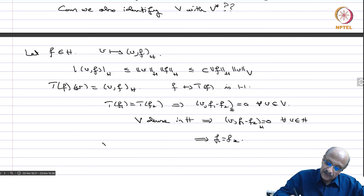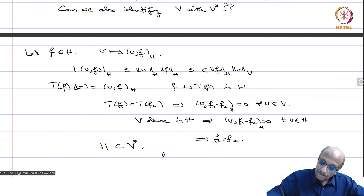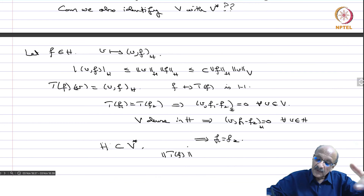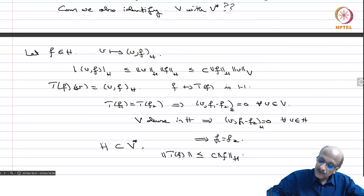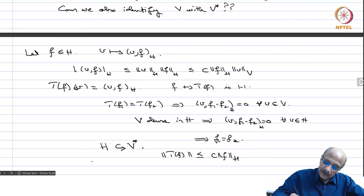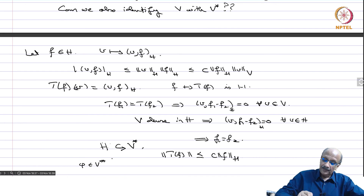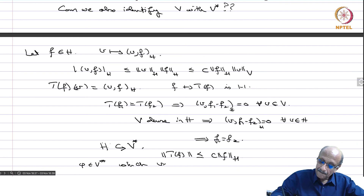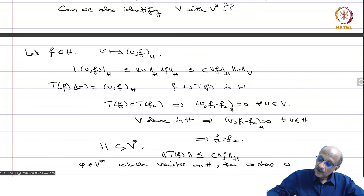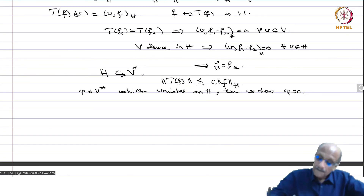We can also show the image of T (i.e., H embedded in V star) is dense. If phi in V double star vanishes on the image of H, we show phi = 0. Since V is a Hilbert space it is reflexive, so there exists x in V such that phi(f) = f(x) for all f in V star. Then for all f in H, phi(T(f)) = T(f)(x) = inner product x,f in H = 0.